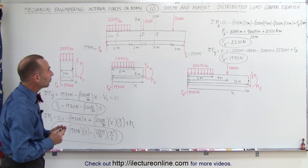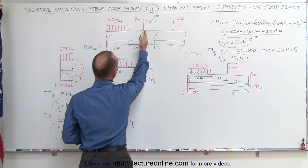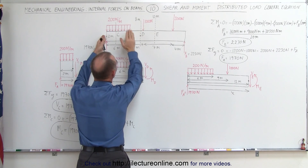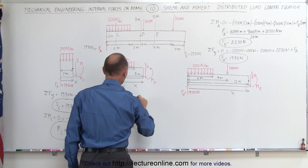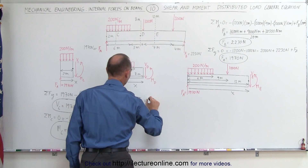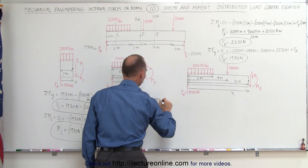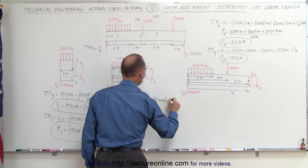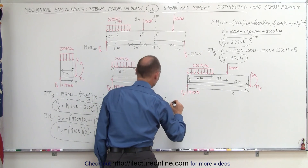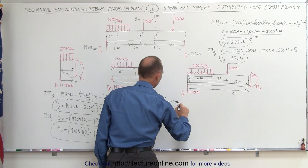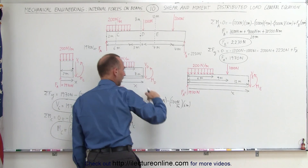Now we work on the second section — the shear and moment between 6 meters and 9 meters. We include all of the distributed load but none of the point loads. Summing forces in the y direction equals 0: we have the reaction force at A, positive 1,970 N, then subtract the distributed load force, which is 200 N per meter times 6 meters, and then we add the shear force, which is negative V sub D.